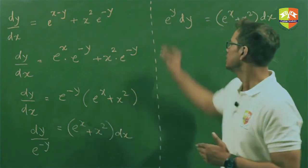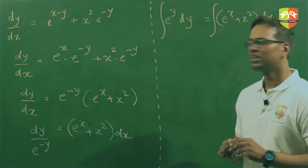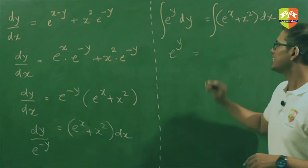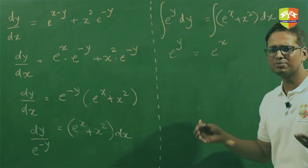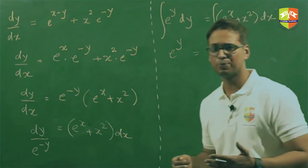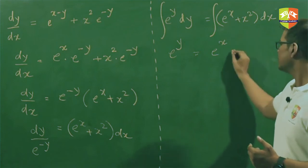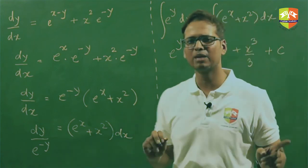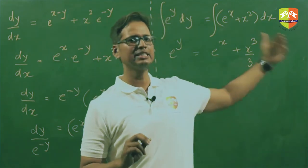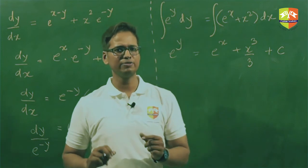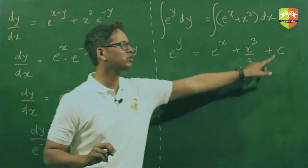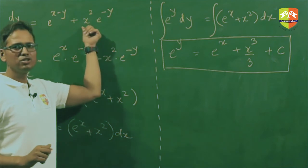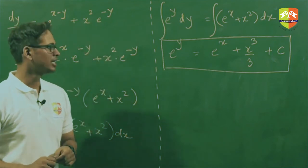Now integrate both sides. The integral of e^y with respect to dy is e^y. The integral of e^x is e^x, and the integral of x² is x³/3. Place the arbitrary constant c on only one side — even though integration happens on both sides, the constant of integration is written on just one side. This equation is the general solution.